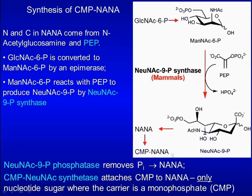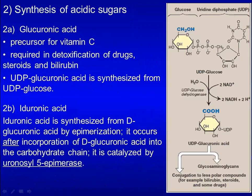CMP-NANA is the only nucleotide sugar where the carrier is a monophosphate. UDP-glucuronic acid is synthesized from UDP-glucose by oxidation at the C6 position of glucose. Glucuronic acid is a precursor for vitamin C. It is required for detoxification of drugs, steroids, and bilirubin.